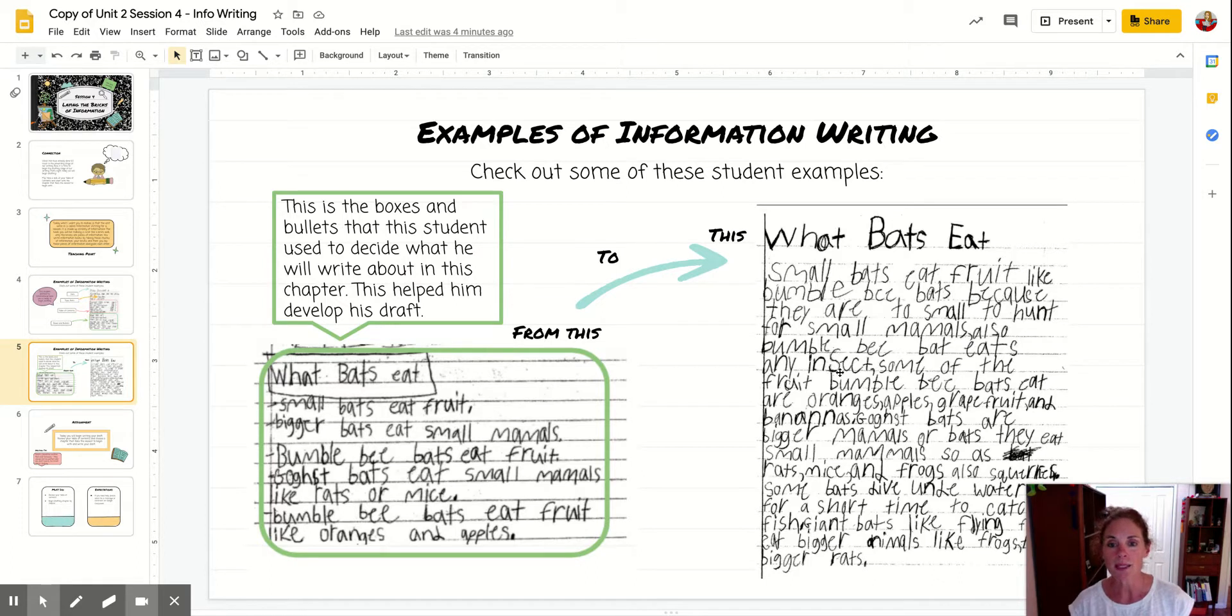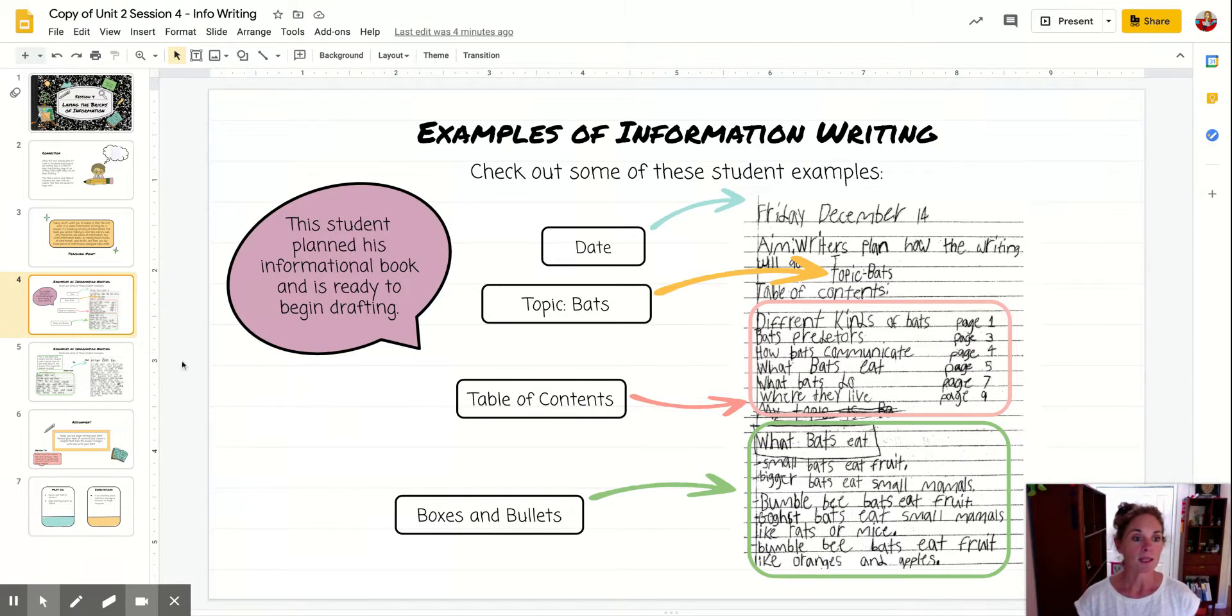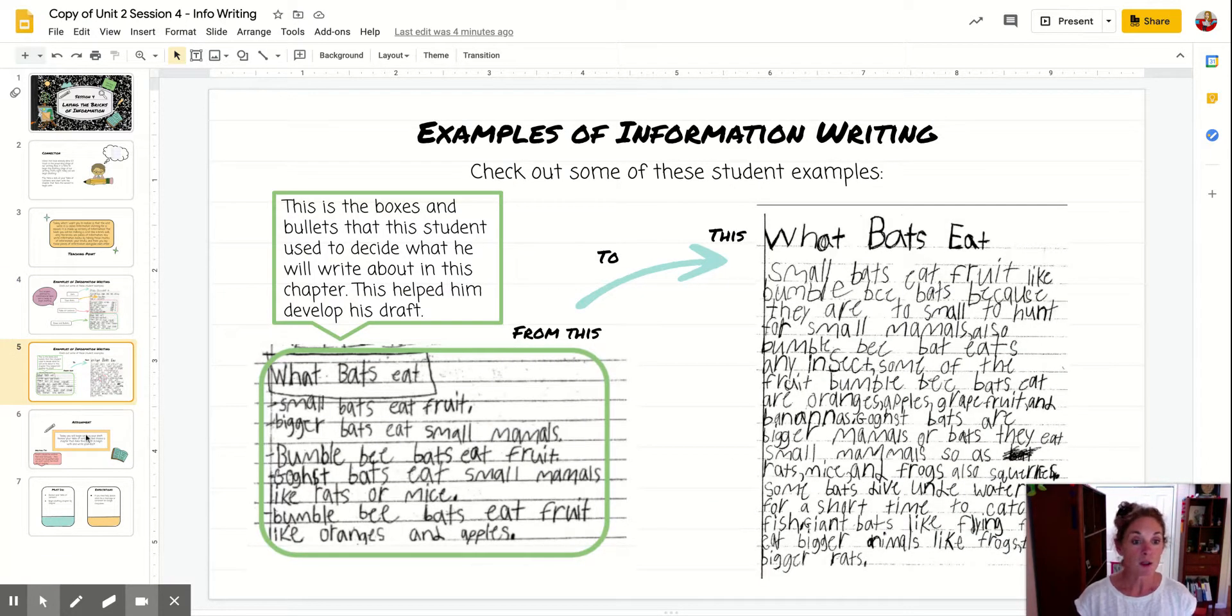So bumblebee bats eat any insect, and he goes on. But you can see that it's not directly transferring from the boxes and bullets onto his rough draft. And this is a very rough draft. He's going to be working on this for a while, making it better and better and better. But I hope that you can keep this structure in mind as you're writing. And if you do, then your chapters are going to be amazing.